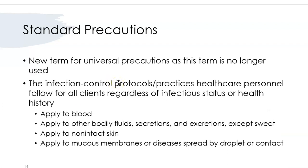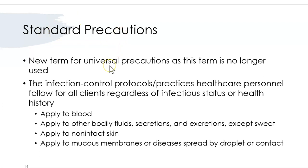The term universal precautions has now been changed to standard precautions. Universal precautions only referred to bloodborne pathogens — working with blood and protecting yourself and clients by wearing a mask, sterilizing, and disinfecting. Standard precautions are broader — they also include protecting yourself from droplets and airborne transmissions. Whereas universal precautions only looked at bloodborne pathogens, standard precautions look at everything that could possibly make you sick, not just blood.